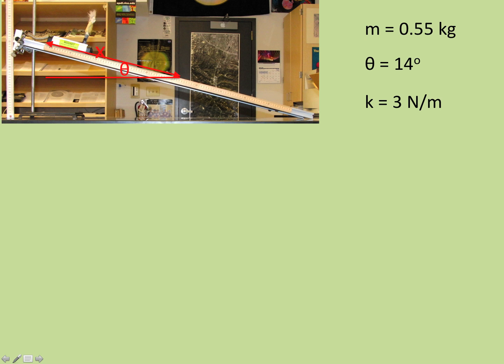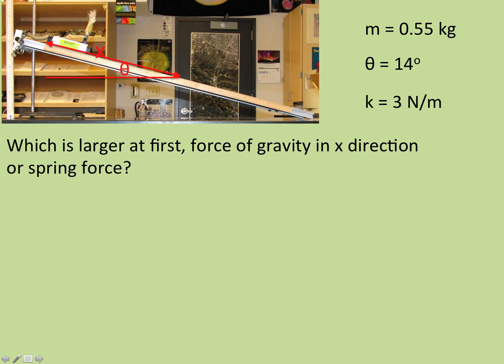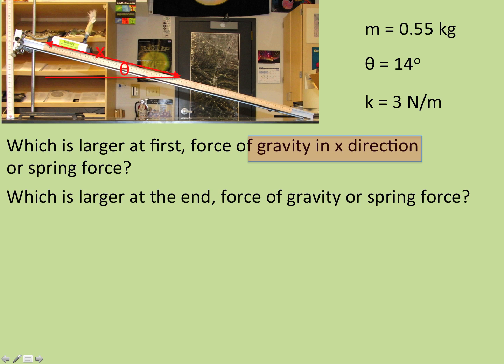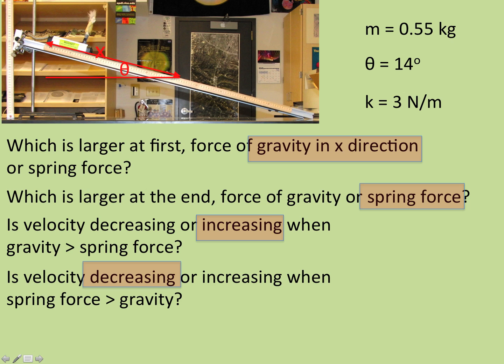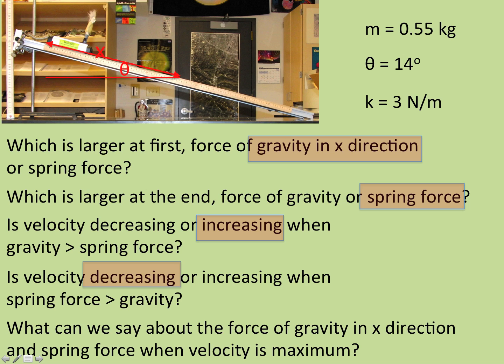Let's think about this. What's larger right when I release him, the X component of gravity or the spring force? We know it's gravity, because the spring force is 0 at the beginning. Mg sine theta is the component of gravity in the X direction along the ramp, and that's bigger. How about at the end? Spring force. The spring is now stretched, it's slowing him down. So at the beginning, we know the velocity is increasing, and at the end, when the spring force is greater, the velocity is decreasing. If it's going up at the beginning and going down later on, there's got to be a point in between where it's the most.